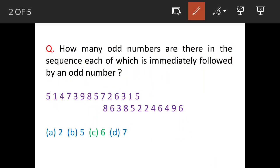The question is: how many odd numbers are there in the sequence, each of which is immediately followed by an odd number? The sequence is given and the options are from A to D. Option C, 6, is the answer.